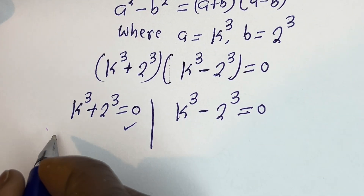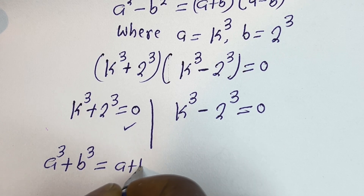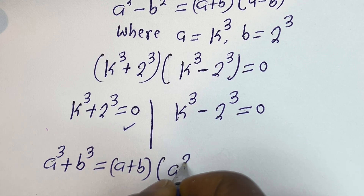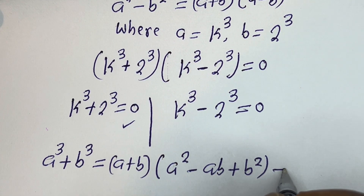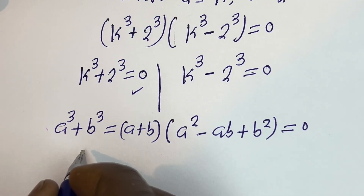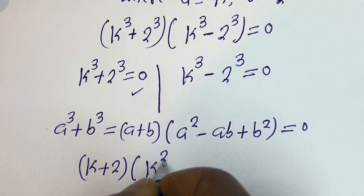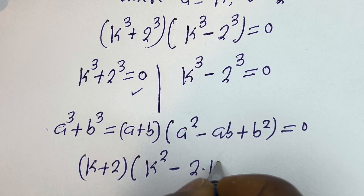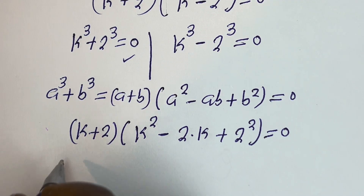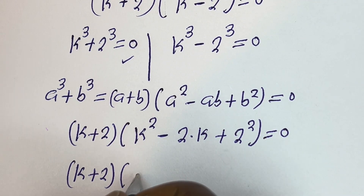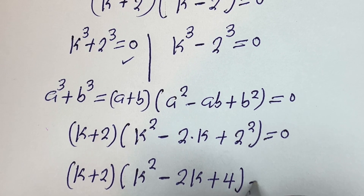Now let's consider the first case. Recall that a cubed plus b cubed equals a plus b, times a squared minus ab plus b squared, all equal to 0. So this becomes k plus 2, times k squared minus 2k plus 4, equals 0.